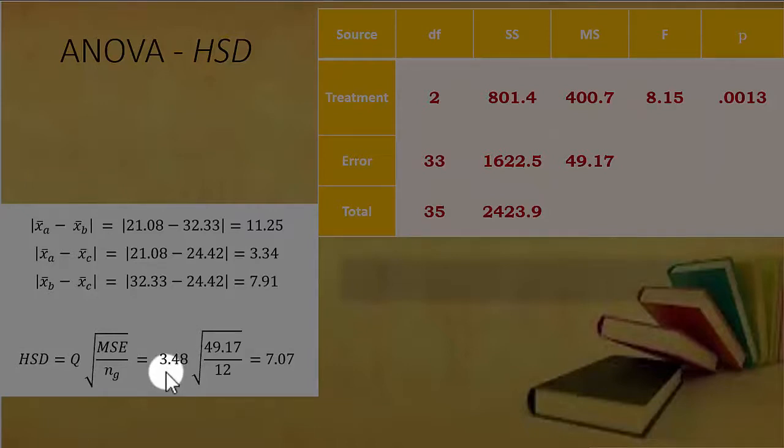Then take MSE which is 49.17, divide by the size of each group and we had 12 individuals in each group in our data set. What we conclude now is that the mean for group B is greater than A because 32.33 is bigger than 21.08 and 11.25 is bigger than our 7.07 cutoff.